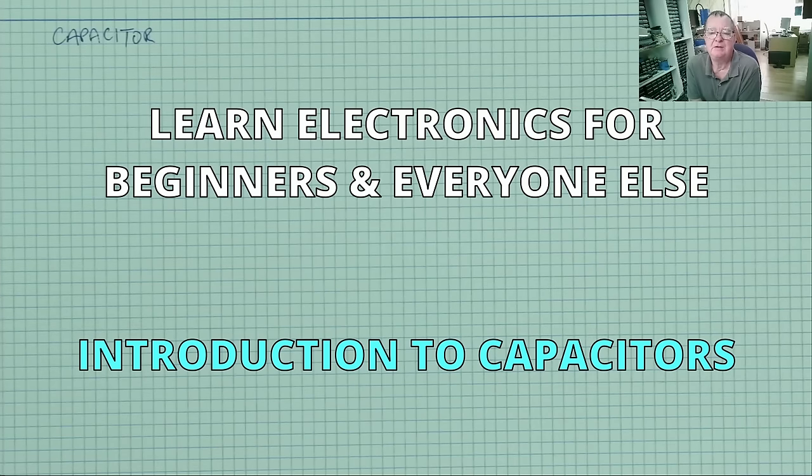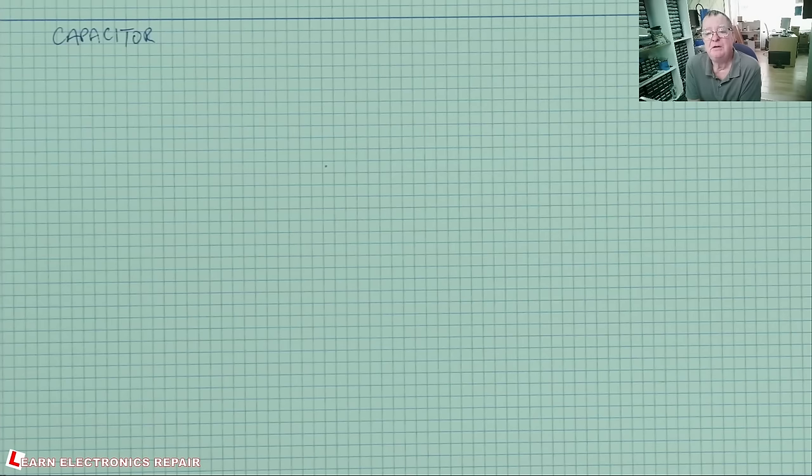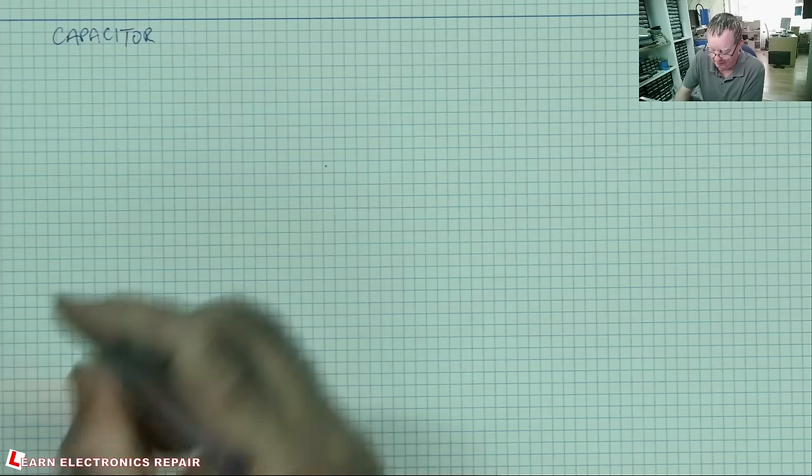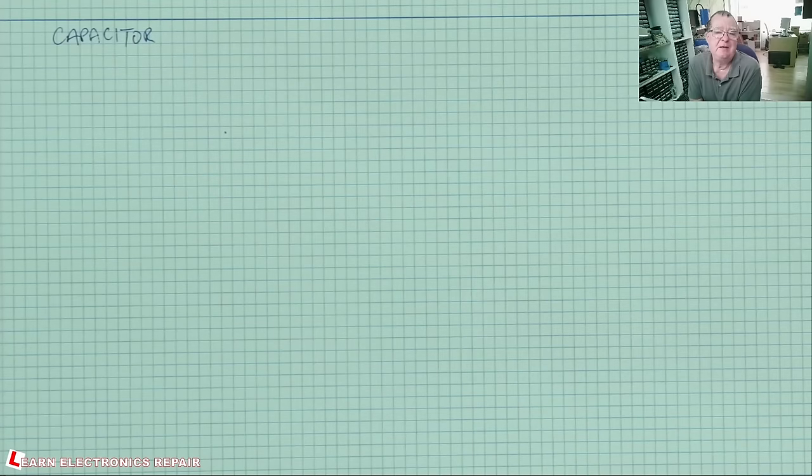Hi guys, welcome to the next video in the series Learning Electronics for Beginners. In this video we're going to talk about capacitors. This is a type of electronic component that is very common. We will find capacitors in almost all electric circuits, we find them everywhere.